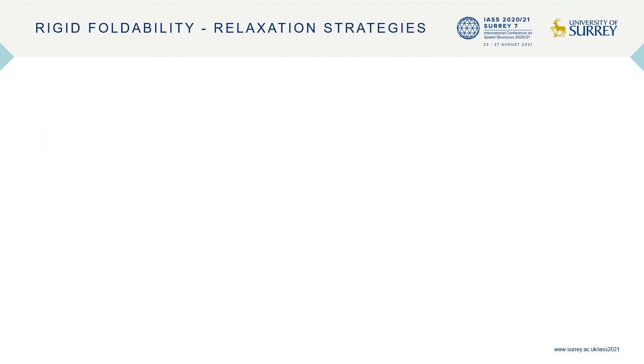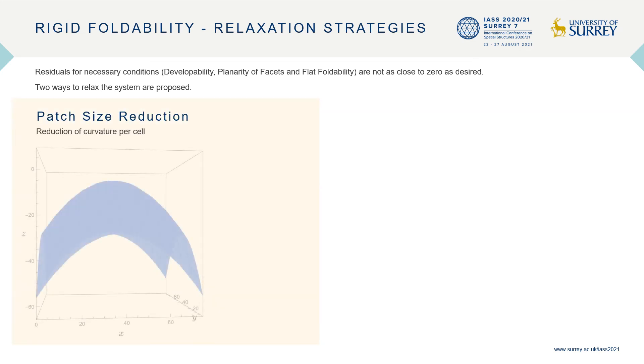Rigid foldability requires the imposition of flat foldability which increases the indeterminacy of the system significantly. This makes it much harder to find converged solutions. We adopt two strategies to relax the equation system and ensure convergence. One is to reduce the patch size that is desired on the target surface.